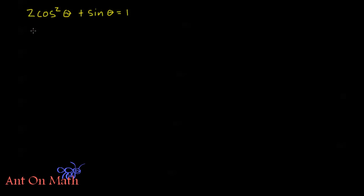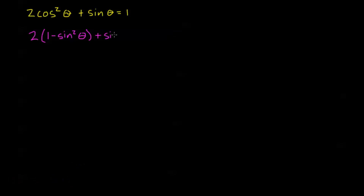This would be a quadratic equation if I had a sine here instead of a cosine. Well, we have an identity for that — our Pythagorean identity. So I can plug in: cosine squared theta is the same as 1 minus sine squared theta. I still have this plus sine theta, and I want the right-hand side to equal zero, so I'm going to subtract 1 from both sides.